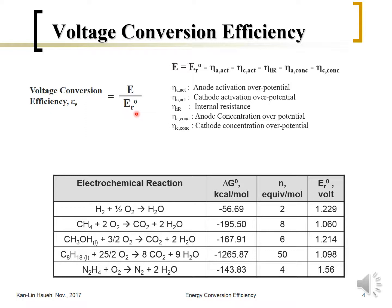The fuel cell output voltage can be calculated from thermodynamics for different fuel cell reactions, and we are able to calculate the equivalent output voltage. It is very interesting to see that even with different kinds of hydrocarbon fuels with different numbers of carbon atoms, the voltage is almost similar — somewhere around 1.1 to 1.2 volts — even though the number of electrons transferred is quite different.